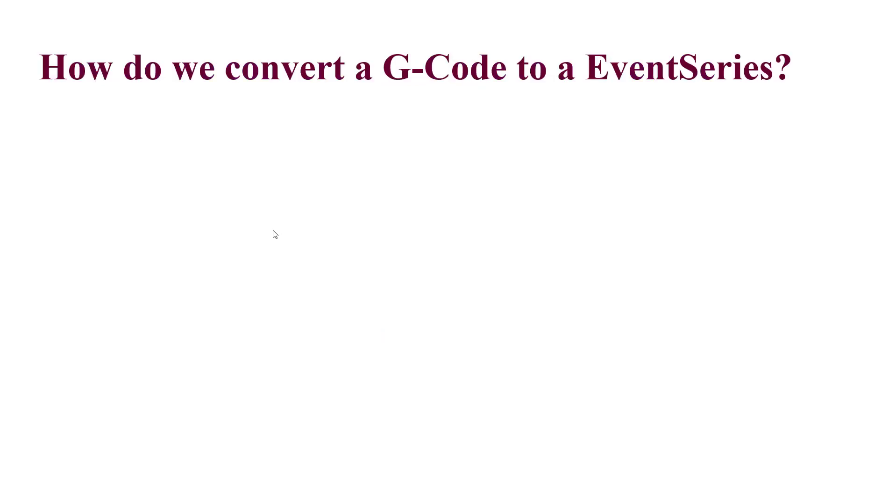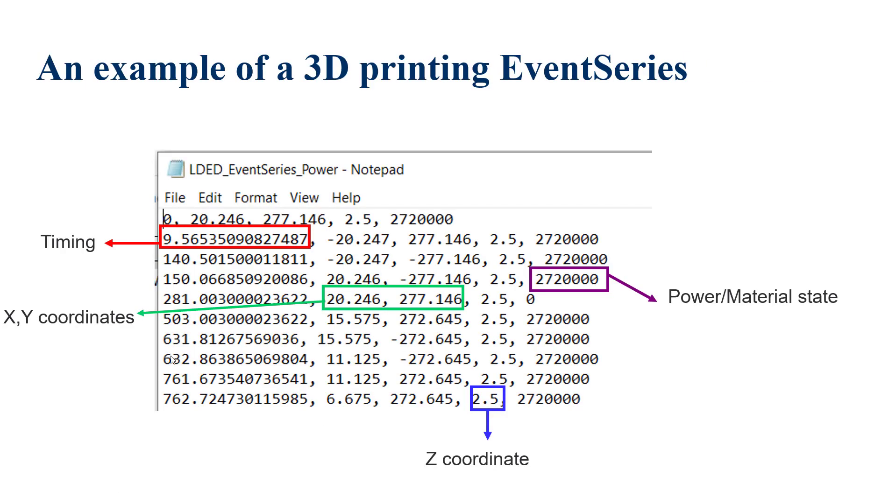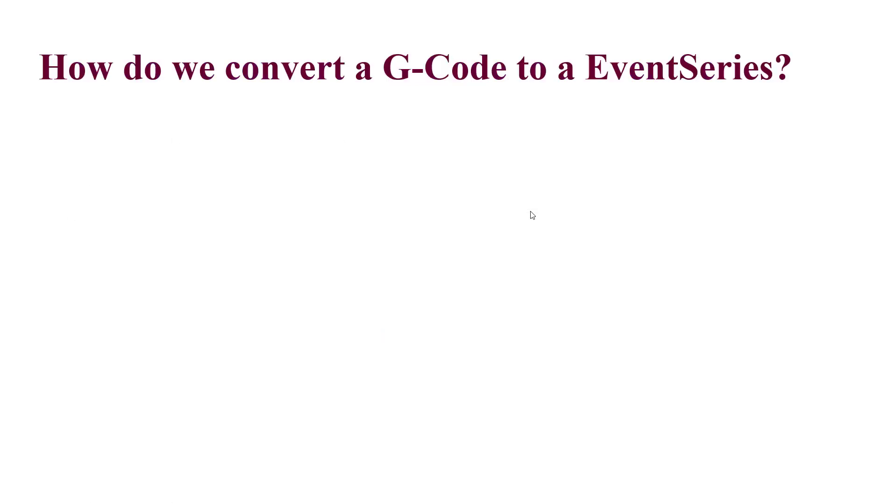But the important question is: how do we convert a G-code to an event series, the format required for Abaqus to read and understand our command? To answer it, I want to create a next video and explain it for you. If you are interested in this tutorial, I will be glad if you like it and subscribe to my channel. Thank you very much!